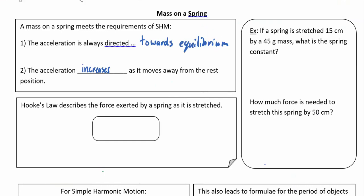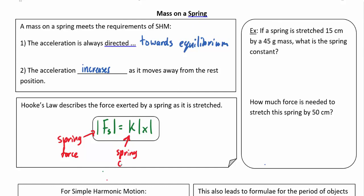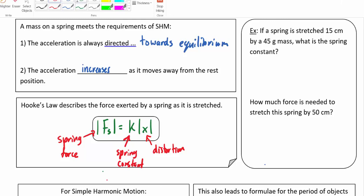Hooke's law tells us that the absolute value of the force on a spring is equal to k times the absolute value of its distortion. Fs stands for spring force, k is our spring constant, and x is distortion — how much we stretch or compress the spring.